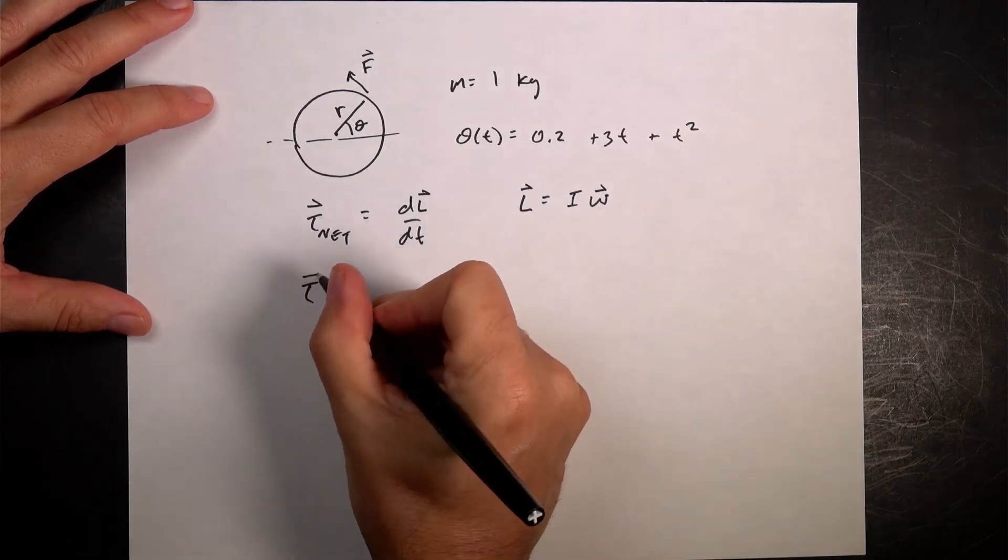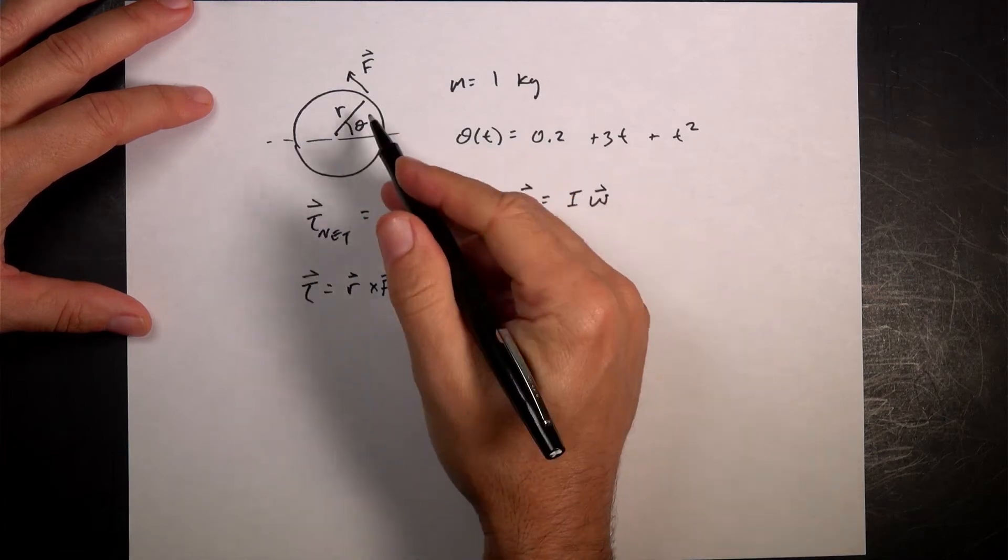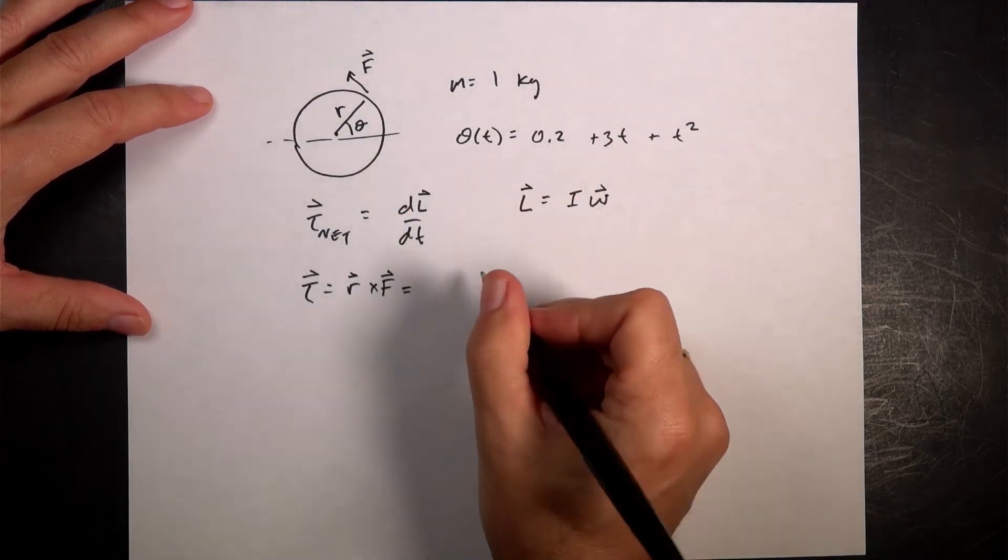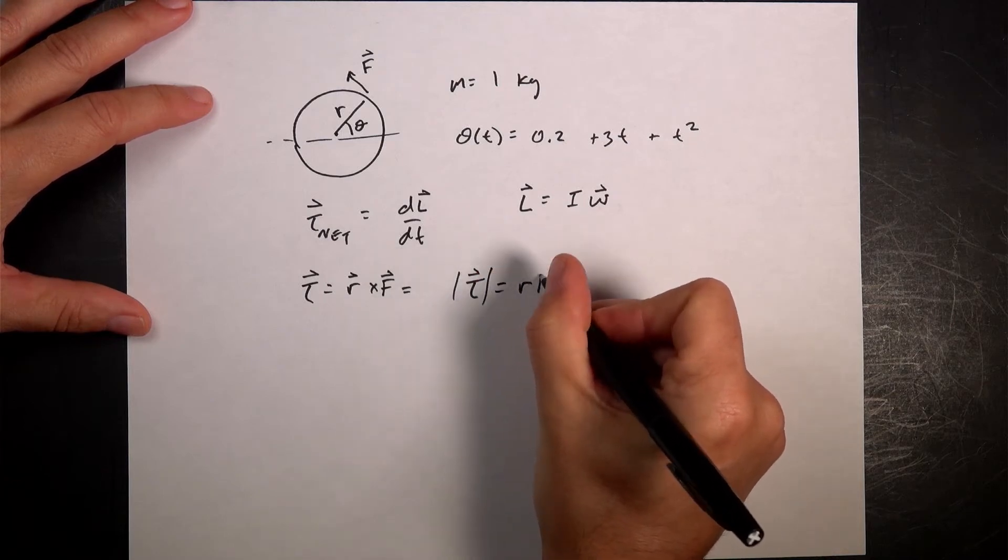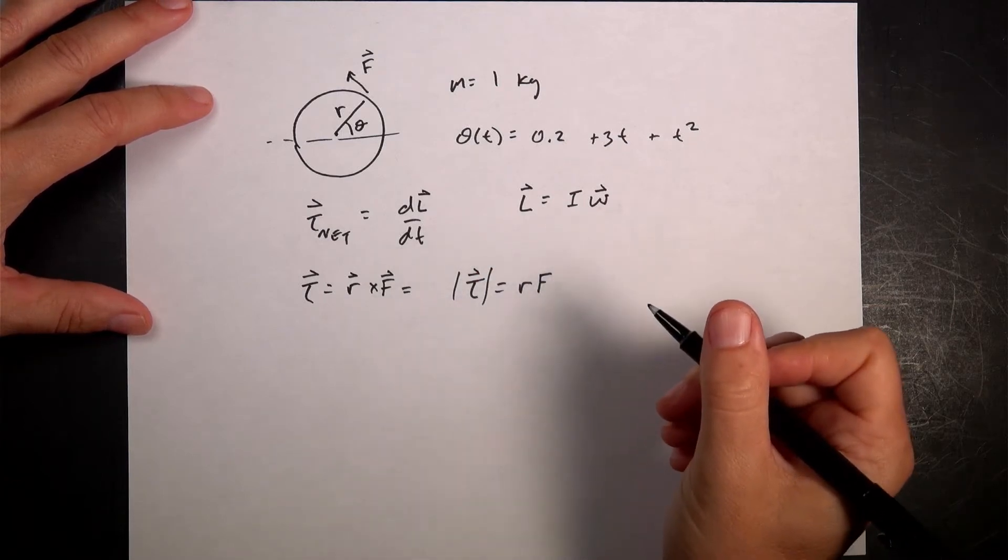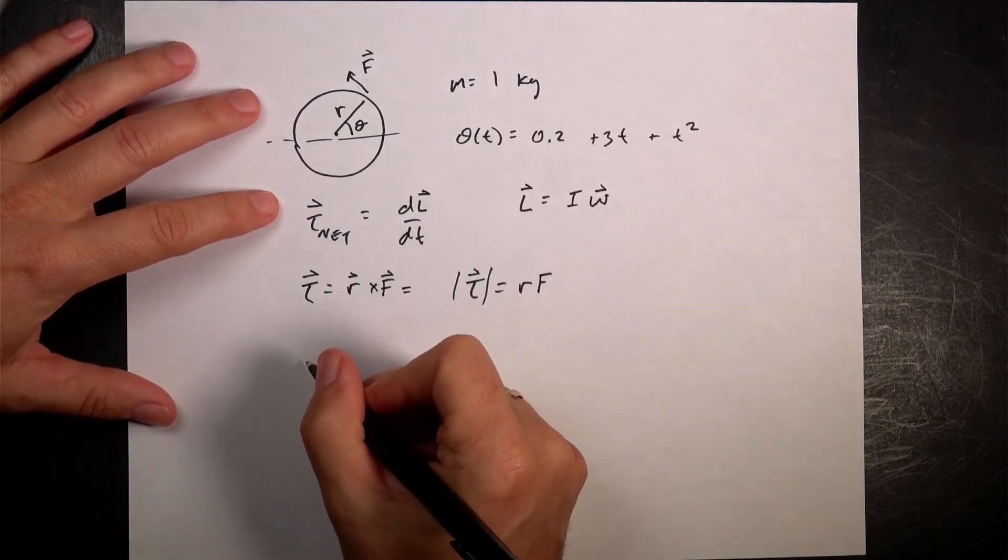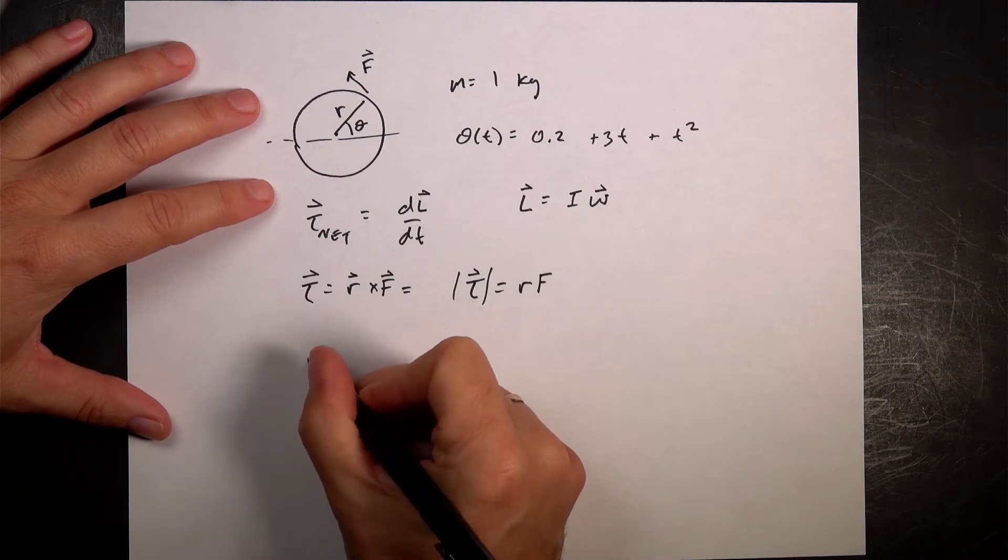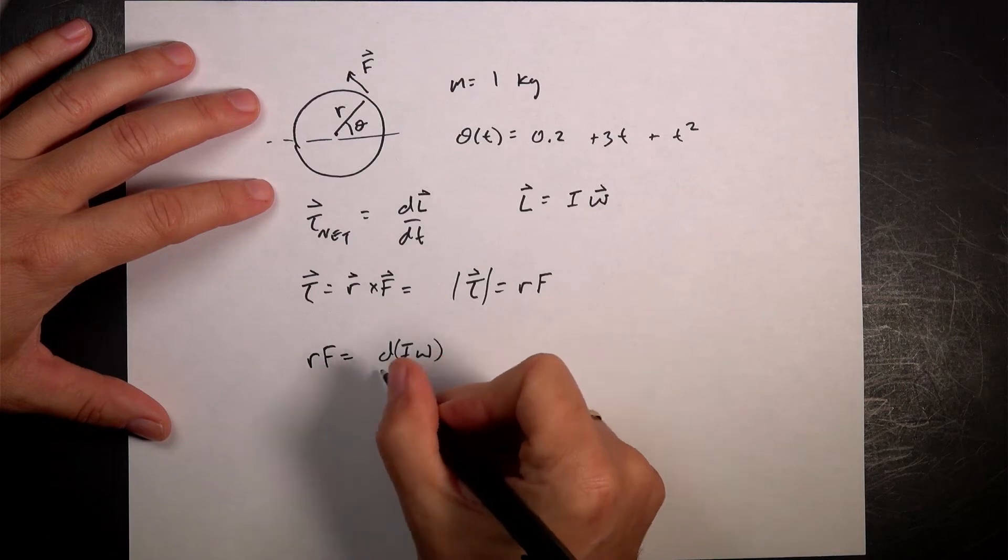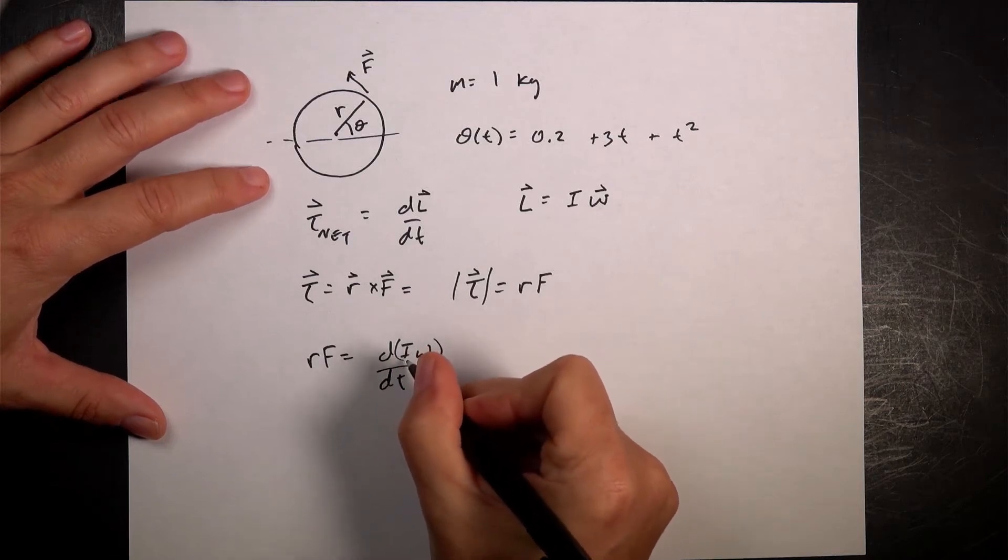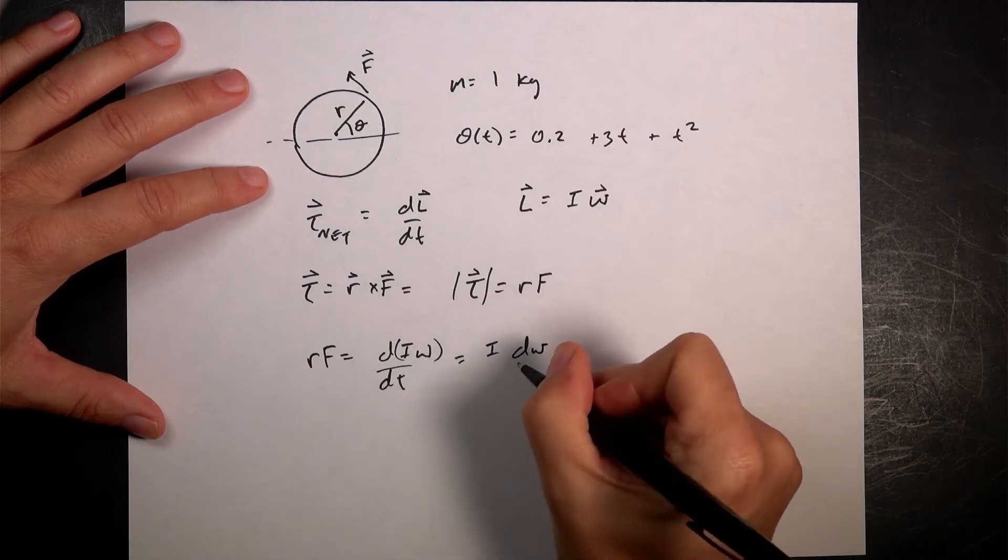Torque is going to be equal to r cross f. Actually, I should write this out. So in this case, r and f are perpendicular. So the magnitude of the torque is going to be r times f. And it's going to be in the z direction. So I can write this whole net torque thing in the z direction as r f is di omega dt.